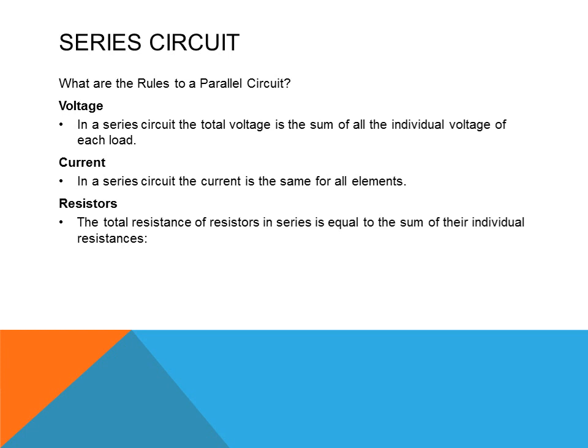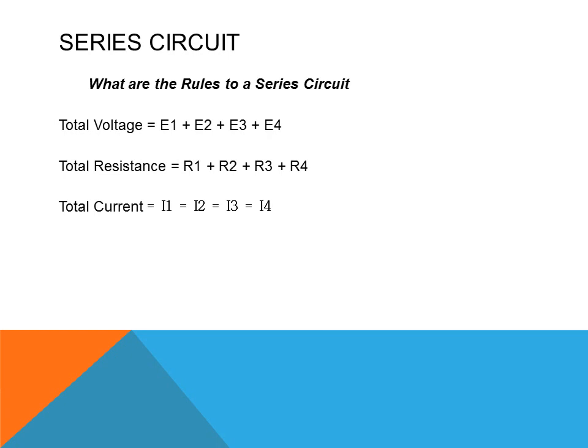The total resistance of the resistors in a series circuit is equal to the sum of all the individual resistors. So if you want to determine the total resistance in a series circuit, just add all the individual resistances up and you have the total resistance in the circuit. To express the rules of a series circuit: voltage equals the sum of all individual voltages; resistance equals the sum of all individual resistances; and current is the same throughout the circuit, no matter where you check it.